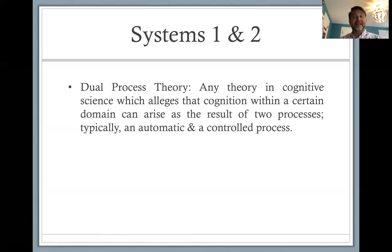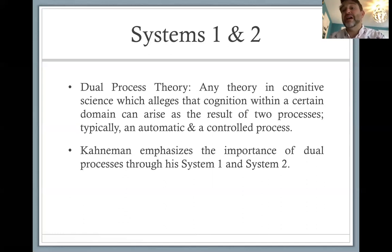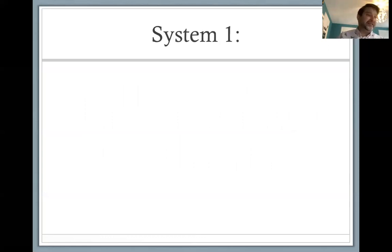Kahneman is introducing us to this basic concept and suggesting that these system one and system two divisions are found across the mind. He suggests there are these two kinds of systems which are often represented in mental activity, and much of the first chapter discusses this. So let's look at what these two kinds of systems are.